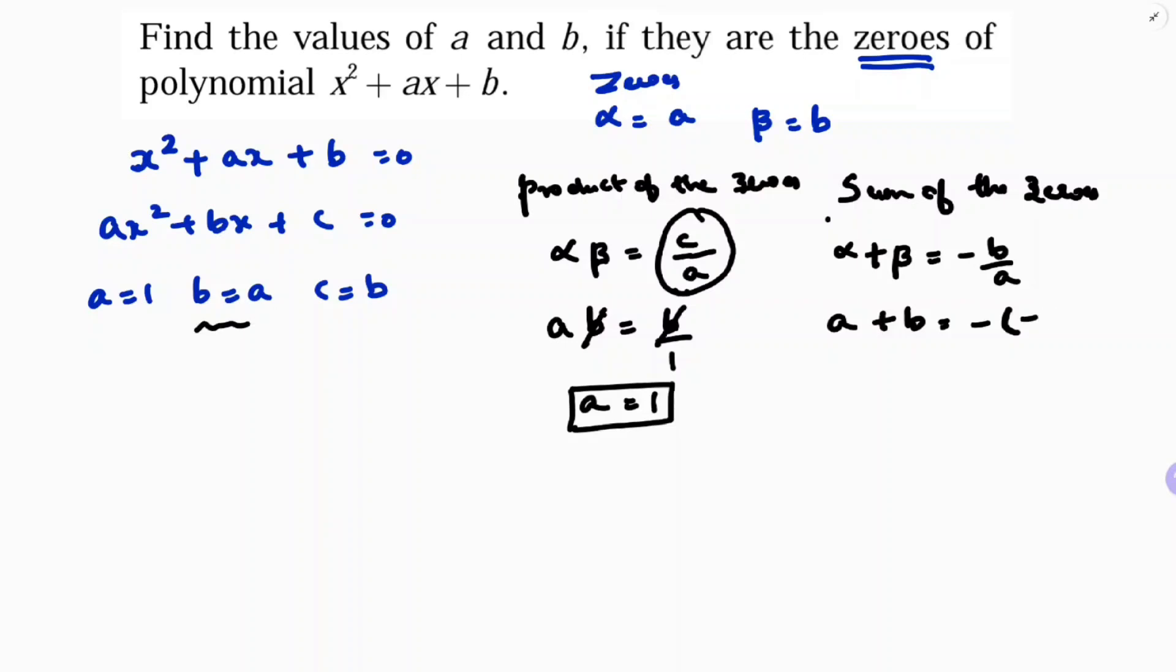So it is minus a by a is one, so a value is one plus b equals minus one. So b equals minus one. If I transfer this to the other side, it is minus one, so b is minus two. a is one, b is minus two.